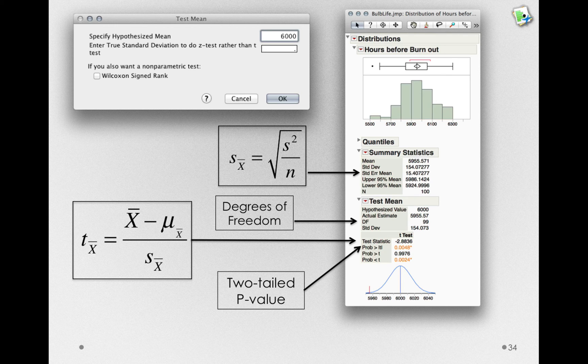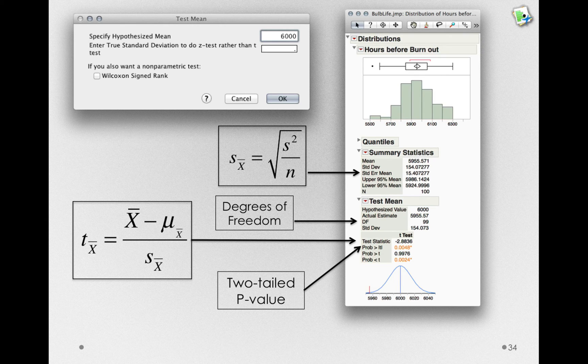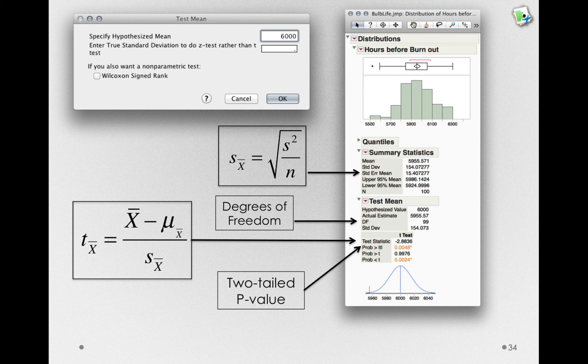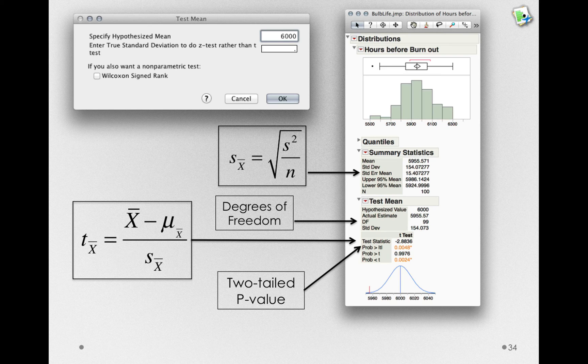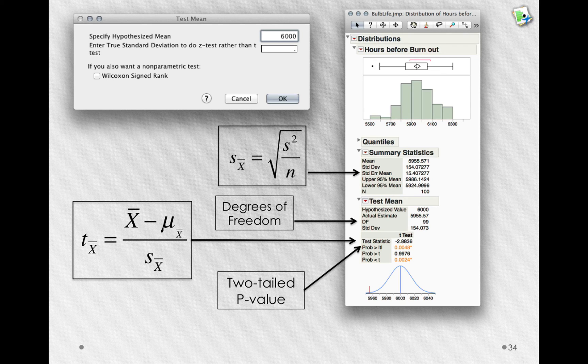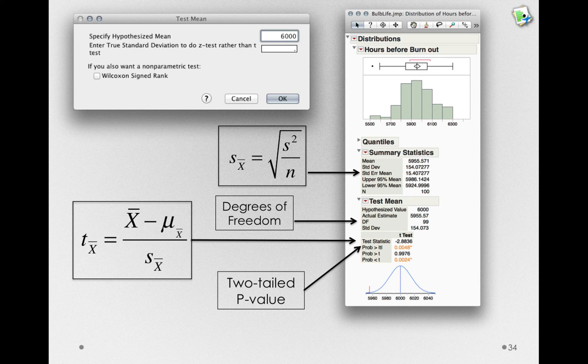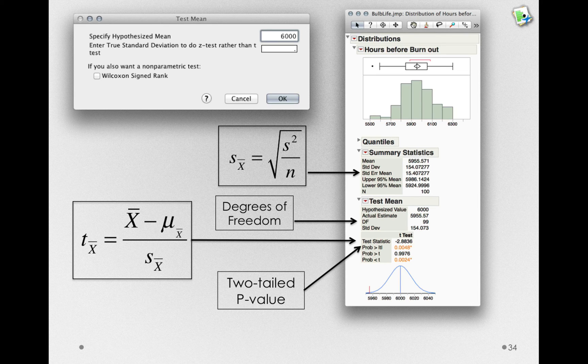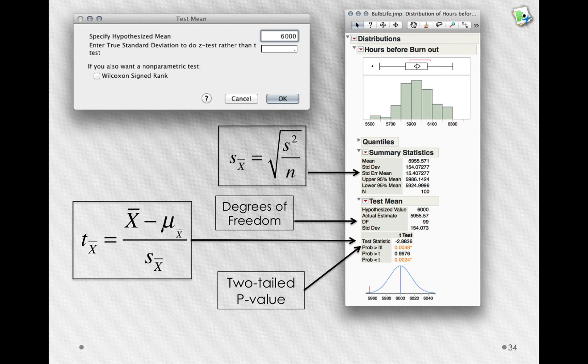So going back, this result is statistically significant. It would be unlikely, if the hours that these bulbs actually lasted was 6,000, that we would observe a sample mean at 5,955. Now this brings up an important point. Although we have a statistically significant result, do we think this result matters? We've just shown that it's unlikely that the bulb life is really 6,000 hours, and we've shown this because our sample mean was 5,955 hours. So we've lost 55 hours off our bulb life out of 6,000.